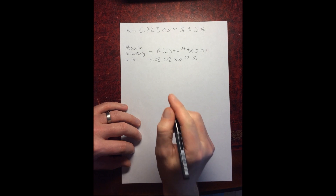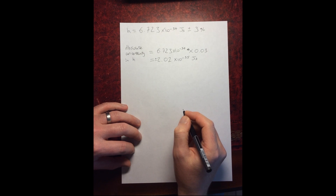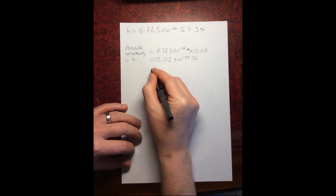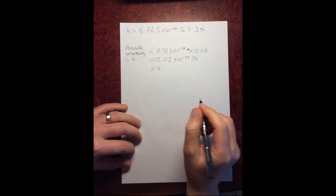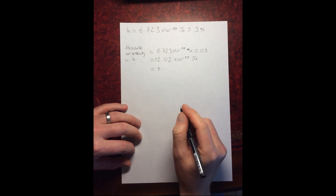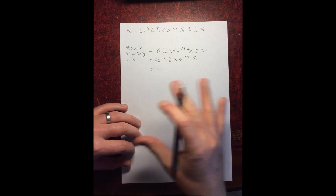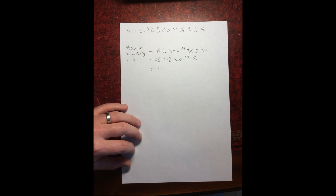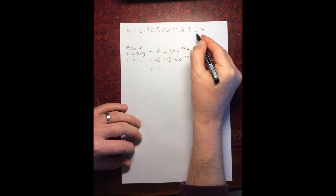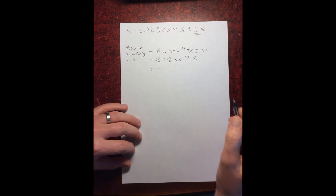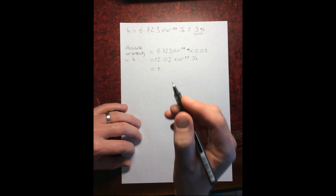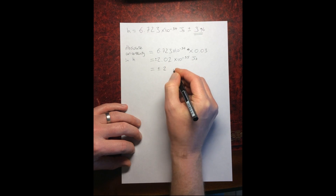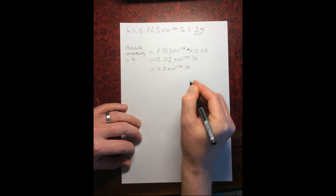Before using that, there are a couple of things we need to do. The first thing is we need to quote that to one significant figure. We always quote uncertainties to one significant figure for the final value. When combining percentage uncertainties together, you can use more than one significant figure, but for your final percentage uncertainty and your final absolute uncertainty, it's one significant figure. So we're going to quote it as 2 times 10 to the minus 35 joule seconds.